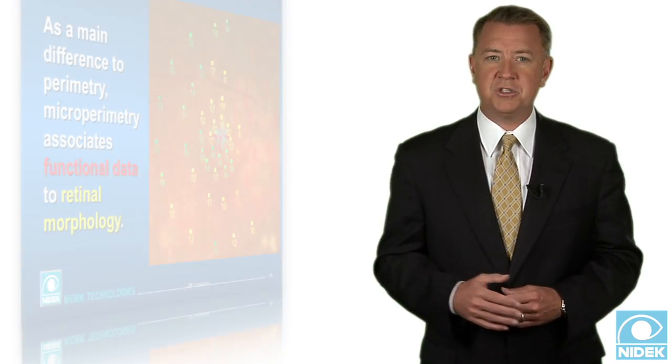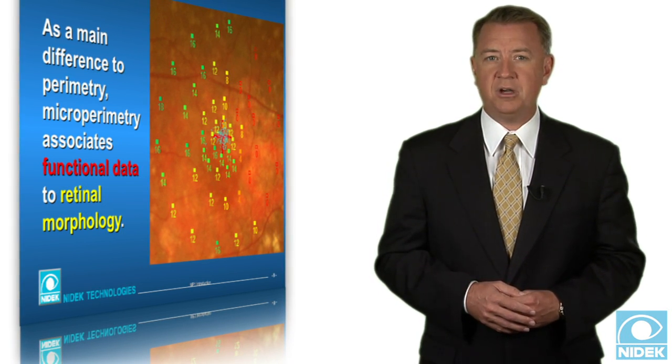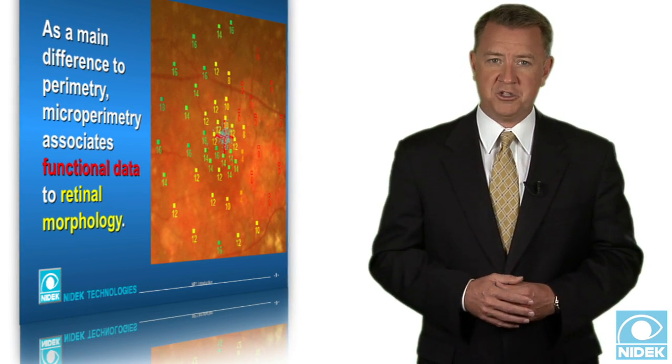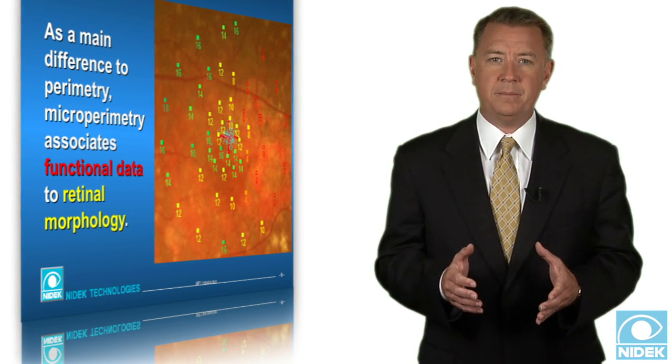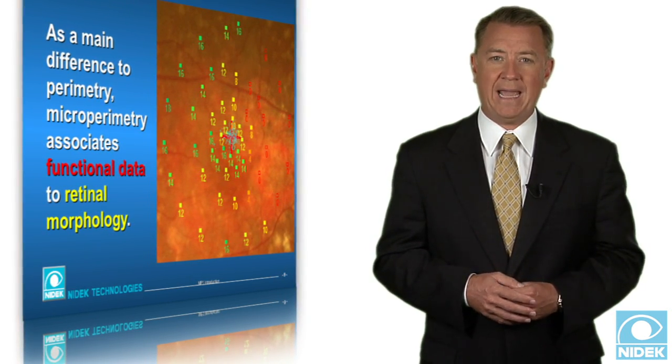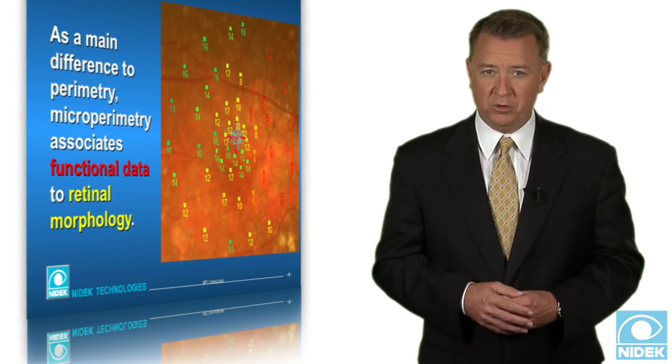As a main difference to perimetry, microperimetry associates functional data to retinal morphology. Furthermore, thanks to the eye tracking system, microperimetry increases precision and repeatability through the ability to follow eye movements.